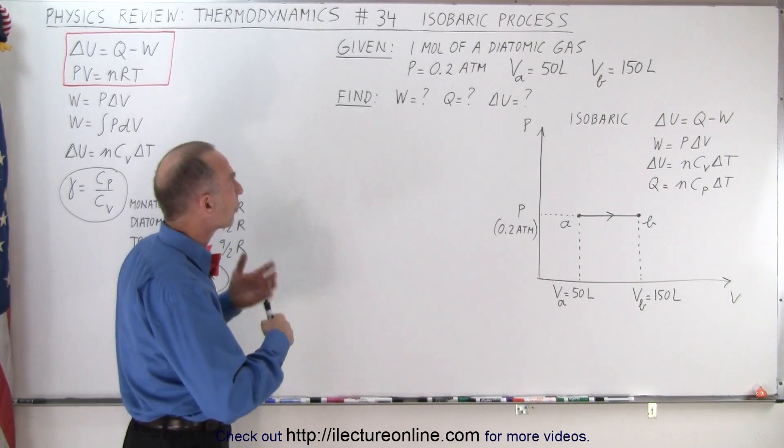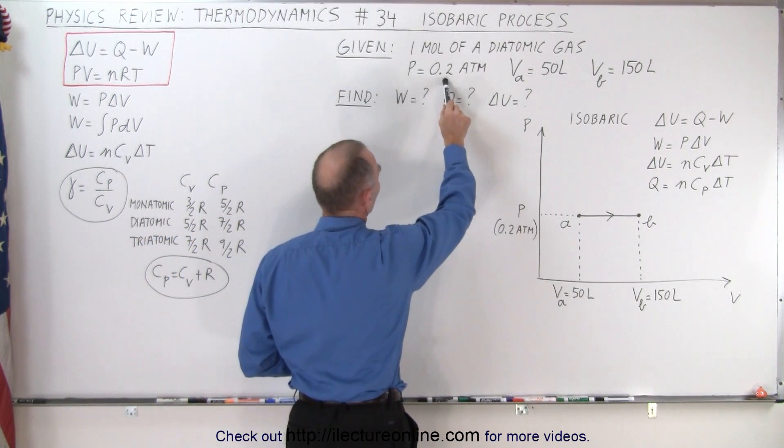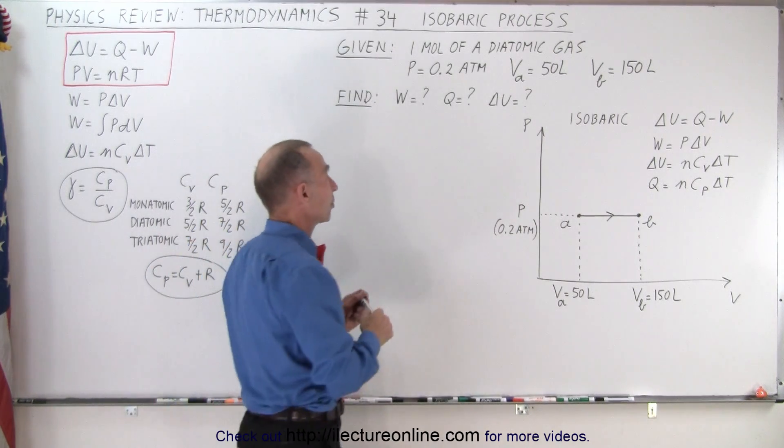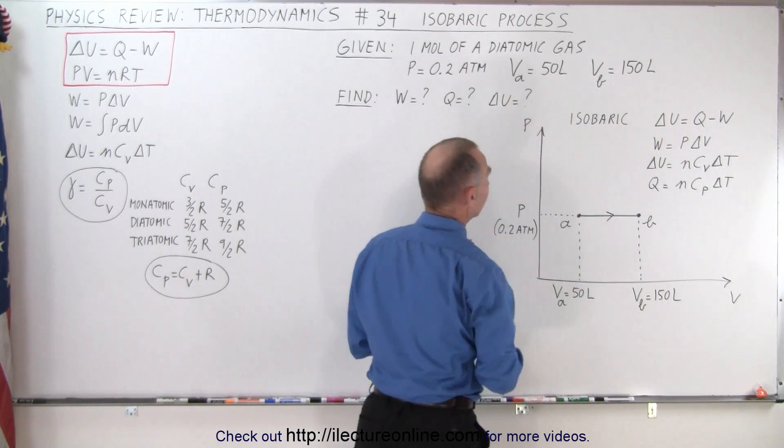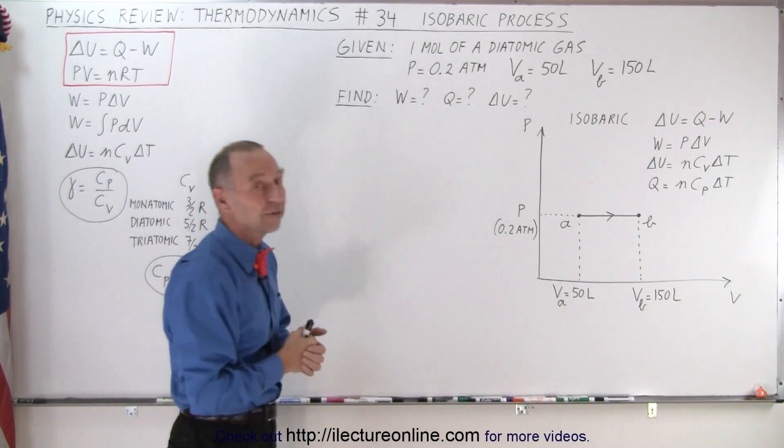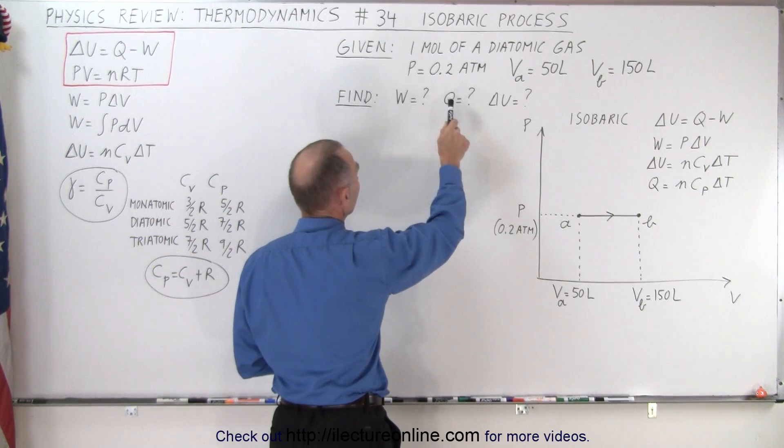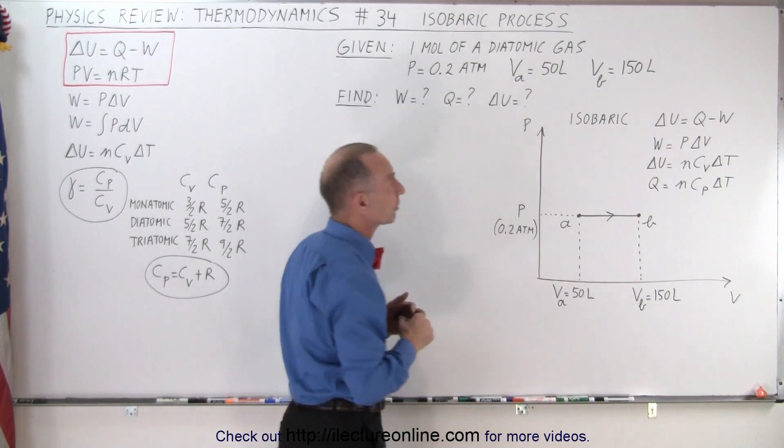Now the problem that we're given is that there's one mole of a diatomic gas, the pressure is at 0.2 atmosphere that will not change because it's isobaric, means pressure remains constant. We start at a volume of 50 liters and the gas expands to a volume of 150 liters, three times the original volume, and we want to find the work done by the gas, the heat added to the gas, and the change of the internal energy of the gas.